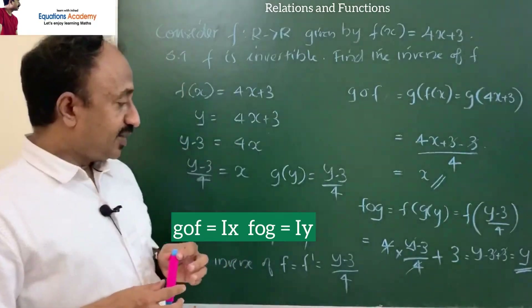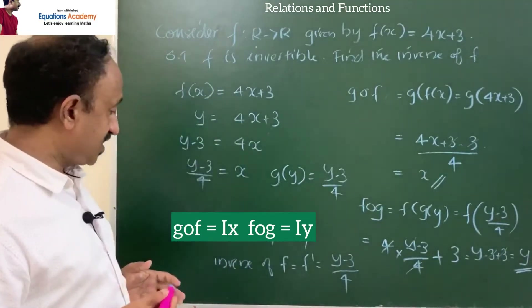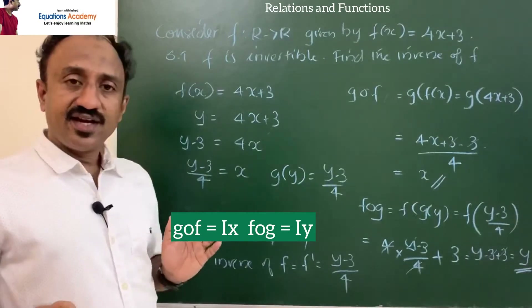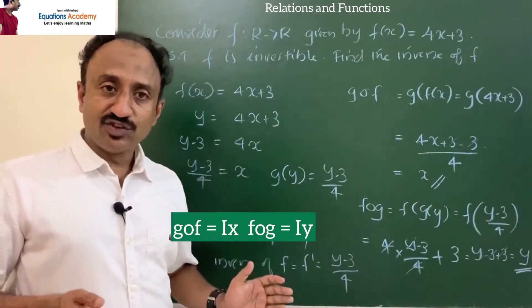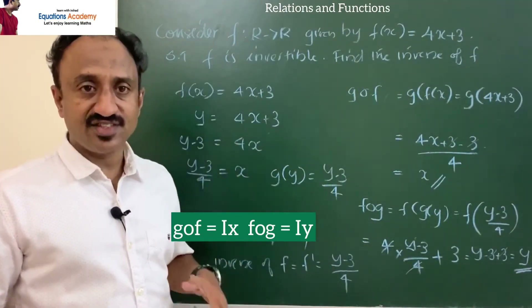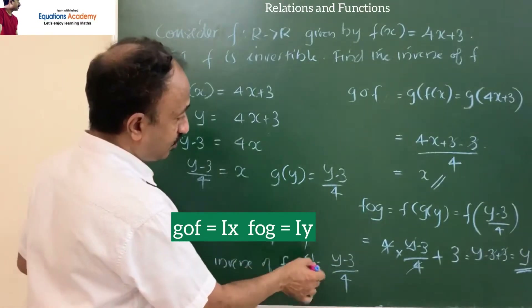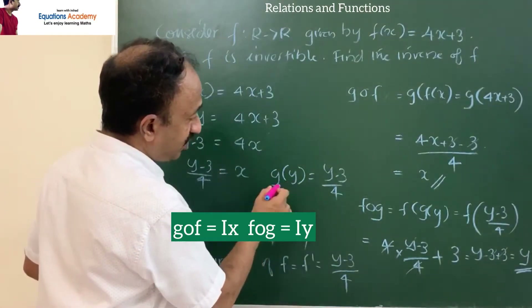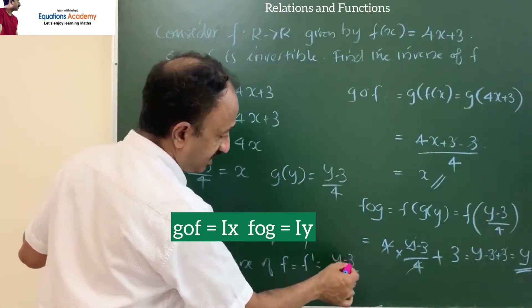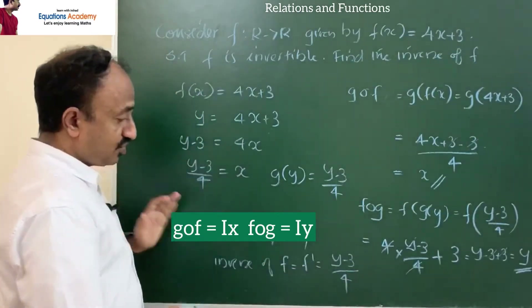Now what is the inverse? According to our definition, f inverse equals g. So the inverse of f is g(y) = (y − 3)/4.